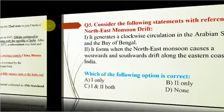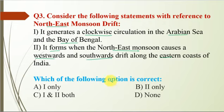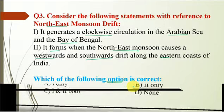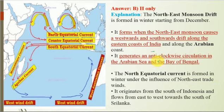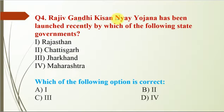Question 3: With reference to North East Monsoon Drift — Statement 1: it generates a clockwise circulation in the Arabian Sea and the Bay of Bengal. Statement 2: it forms when the North East Monsoon causes a westward and southward drift along the eastern coast of India. The correct option is B — statement 2 only. Statement 1 is incorrect because it generates an anti-clockwise circulation in the Arabian Sea and Bay of Bengal. The North East Monsoon Drift forms starting from December, causing a westward and southward drift along the eastern coast of India and the Arabian coast.